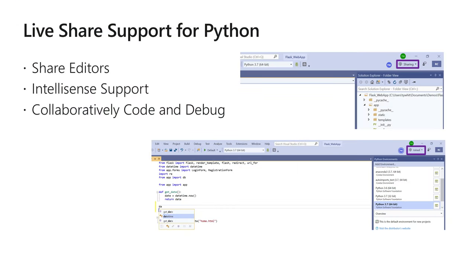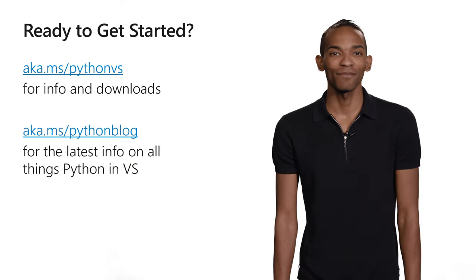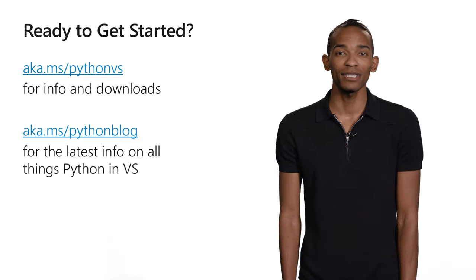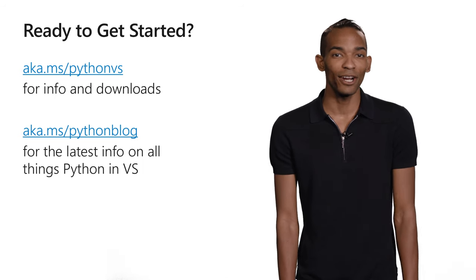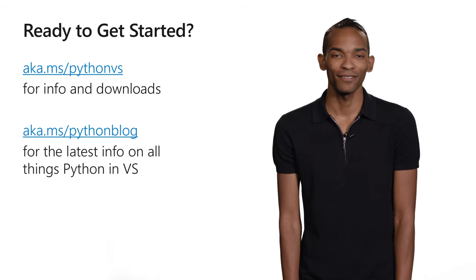There is now Live Share support for Python in Visual Studio 2019. You can initiate a session by clicking the Live Share button in the upper right corner of Visual Studio to generate a link to share with your peers. Users who join can see your Python files, get IntelliSense from your selected Python environment, and collaboratively debug your Python code from their own machine. Visual Studio 2019 brings powerful tools to bring your Python code wherever you may be. Check out the links here for more info. Happy coding.